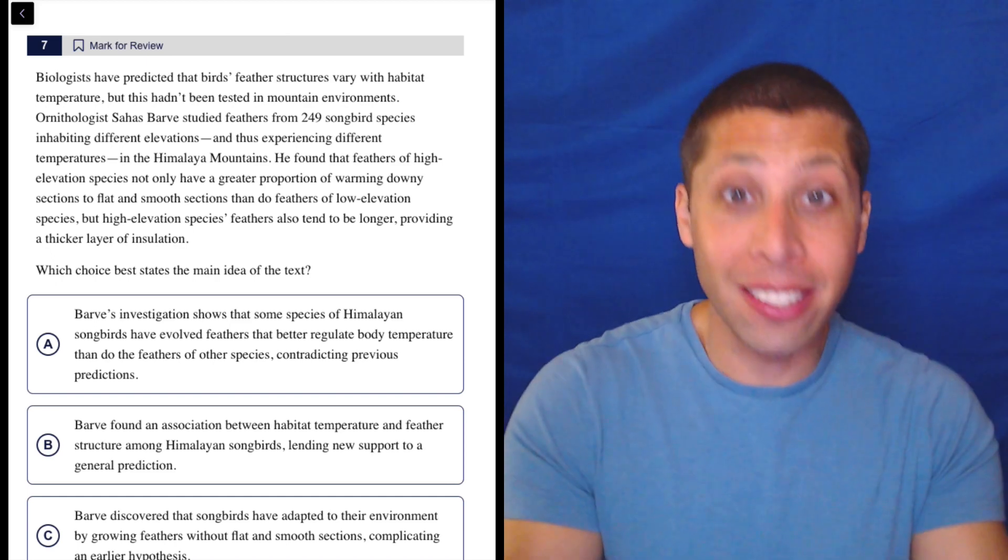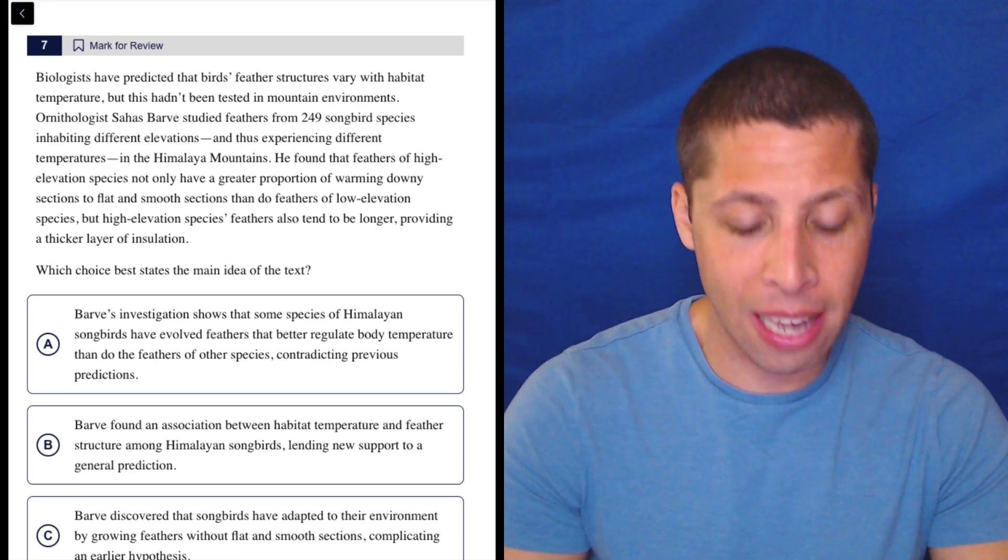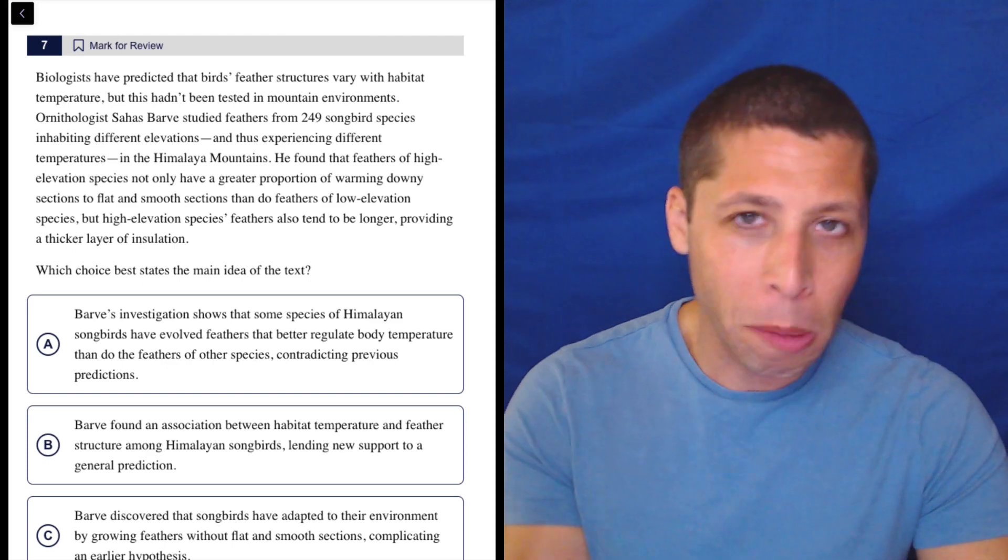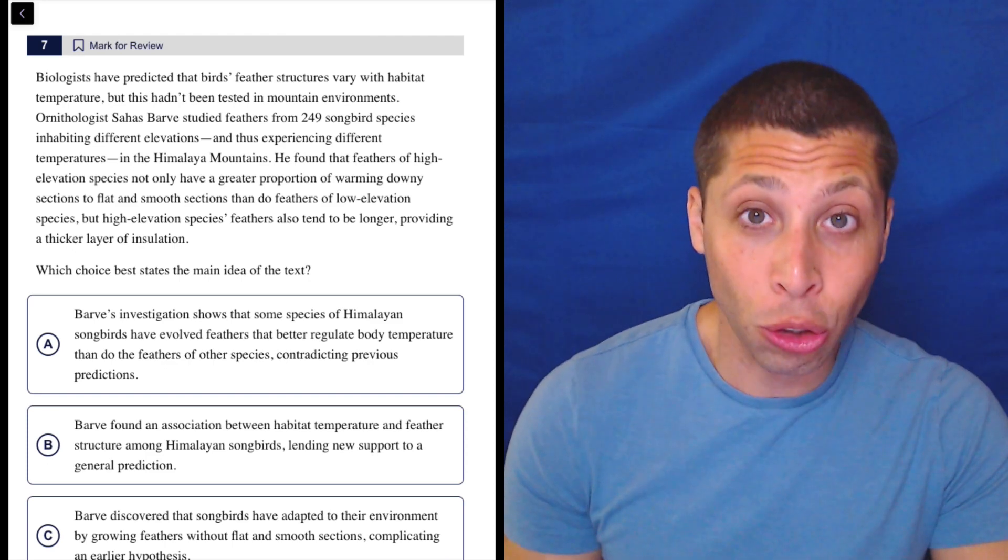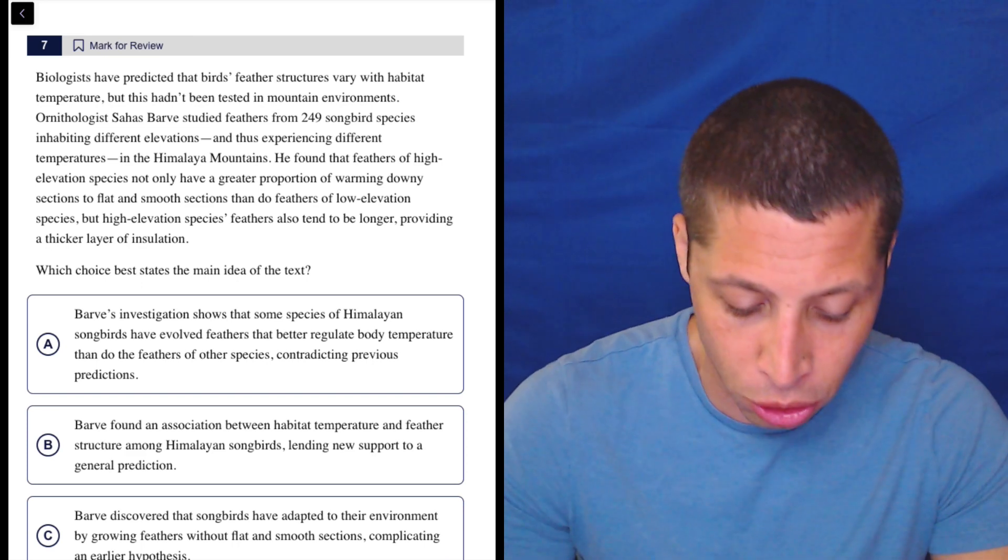They categorize them in different places on the score report, but there's no difference here. I don't know why they do that. This is the same thing. You're going to read the passage, get a rough sense of what it's about. Don't worry about the details, then use the answer choices to go hunting for things in the passage and prove the answer choices correct or incorrect. Let's just do that.